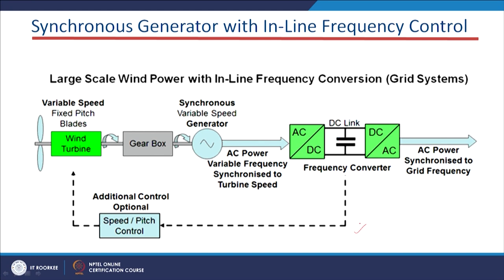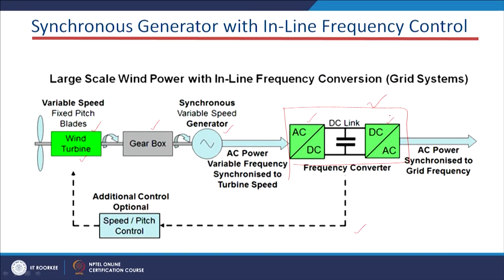This is how this variable synchronous generator-based wind system looks like. Here we have the variable speed fixed pitch blades, the wind turbine section, and the gearbox. After that we have the variable speed synchronous generator, and the extra part added here is the electronic converters. The first part is the rectifier which converts AC to DC, and the second part is the inverter which converts DC to AC power. Both converters are connected via the DC link, and the DC link voltage should be maintained at the rated values.